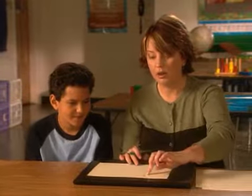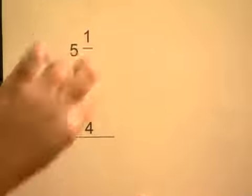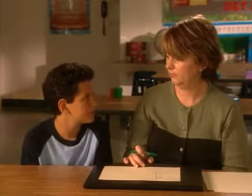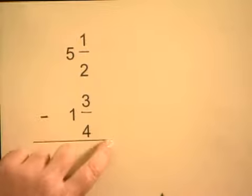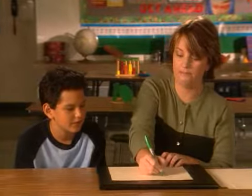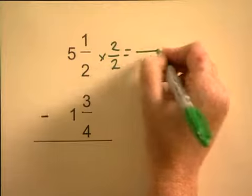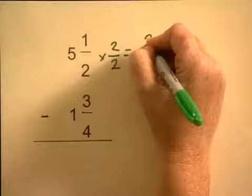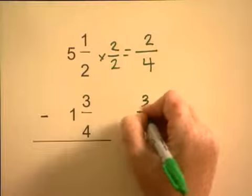Next we have subtraction. Subtraction's a little bit more difficult, but I'm sure we'll be great. Can we find a common denominator for 2 and 4? Can we multiply 4 by something to give us 2? No. Can we multiply 2 by something to give us 4? Yes — 2. 2 times 2 is 4. 1 times 2 is 2. So we have 2 fourths minus 3 fourths.